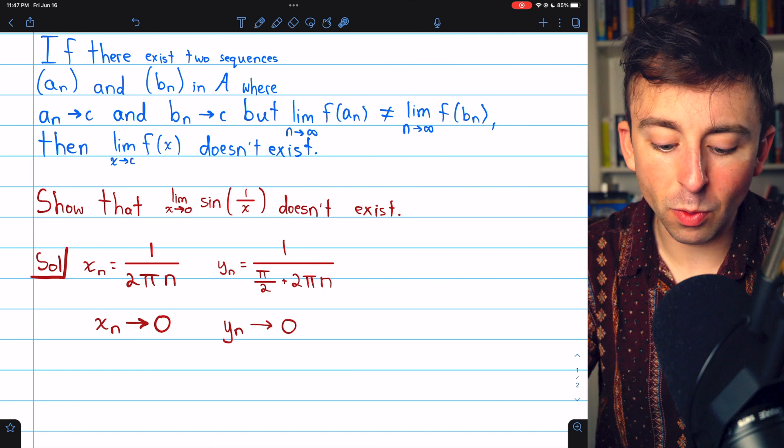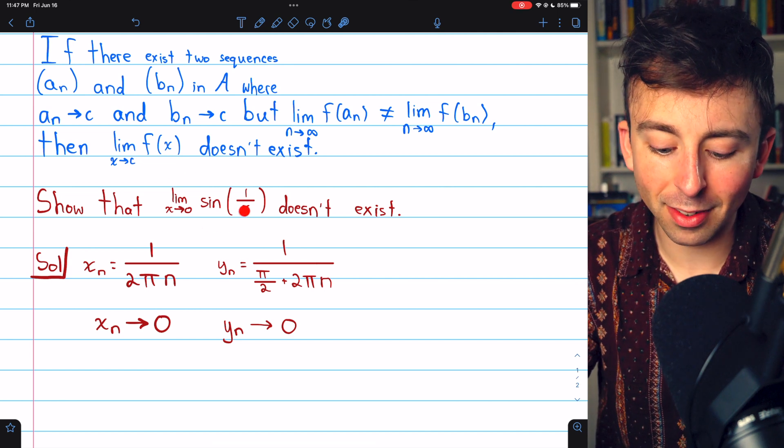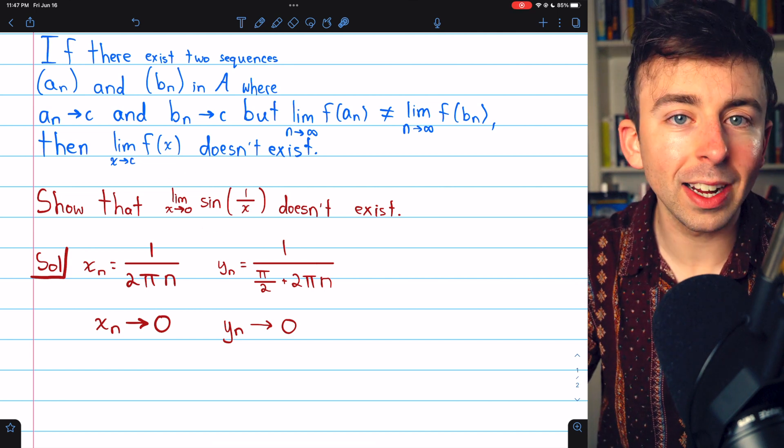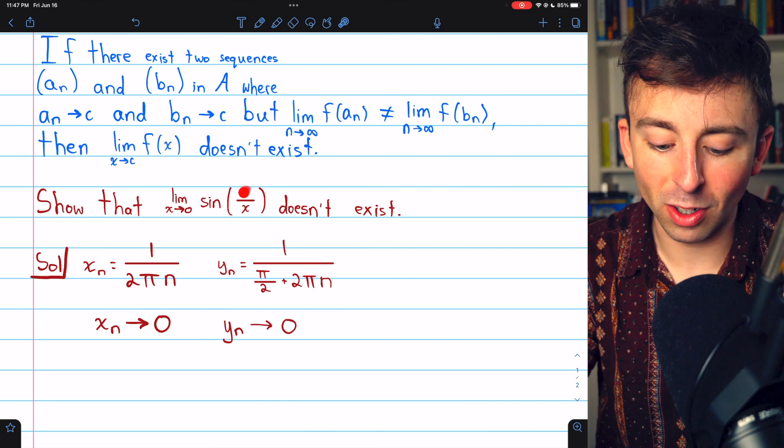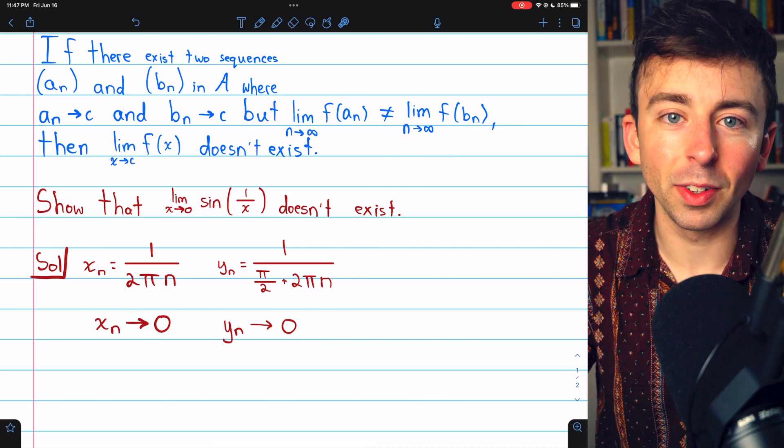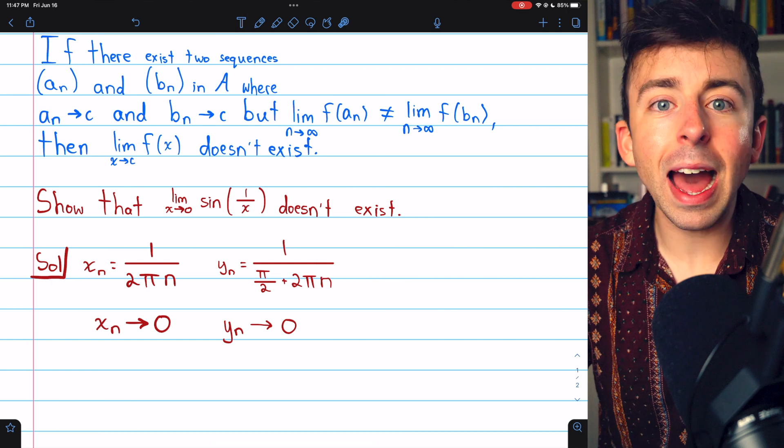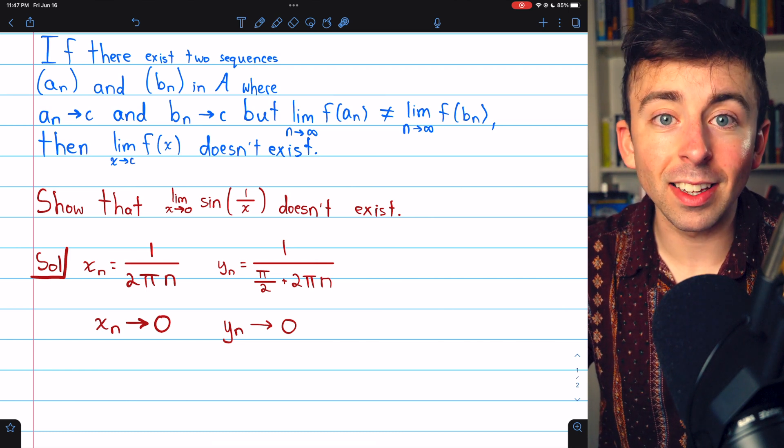By inspection, we can see if x is getting super small, then 1/x is getting really big, so this is just sine of infinity effectively. It's clearly oscillating very quickly. But how do we show that this limit doesn't exist?